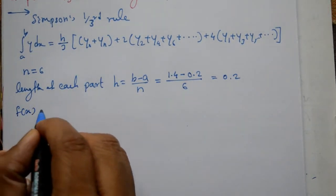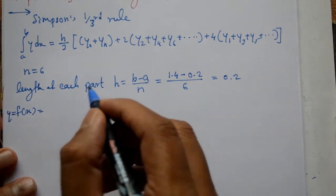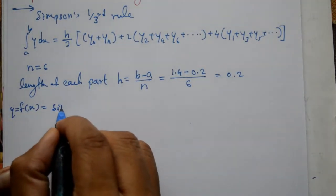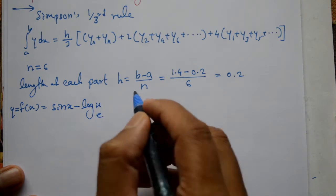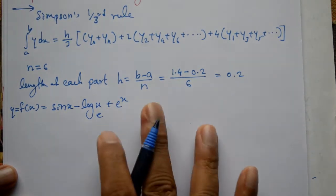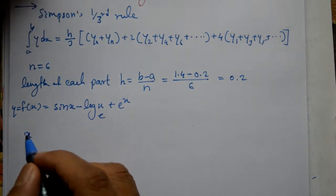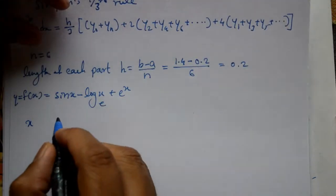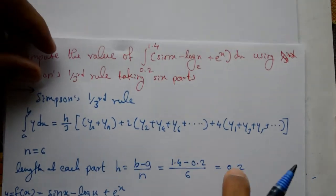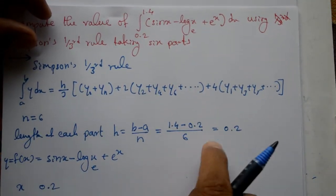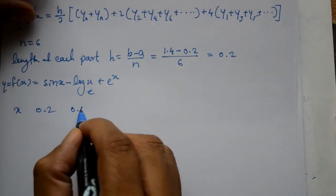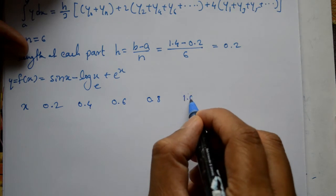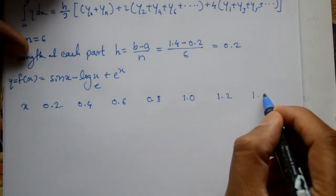f of x equals y. y or f of x is this function: sin x minus log x to the base e plus e raise to x. h is 0.2, the step size. x values are: 0.2, 0.4, 0.6, 0.8, 1.0, 1.2, 1.4.